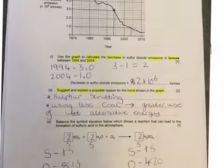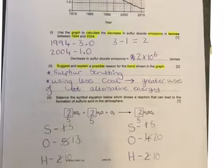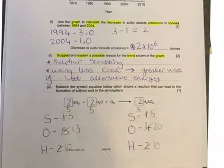Then it says suggest and explain a possible reason for the trend shown in the graph. So sulfur scrubbing and using less coal, greater use of alternative energy. Every time you use coal it releases sulfur which reacts with oxygen in the air causing sulfur dioxide to be formed.